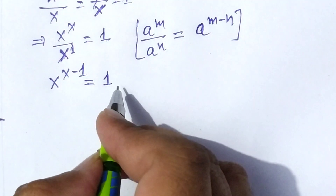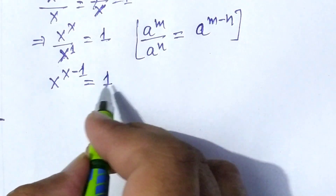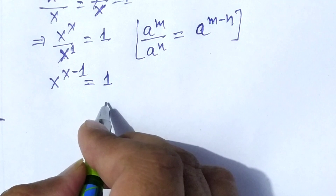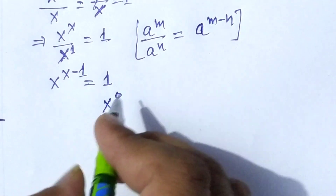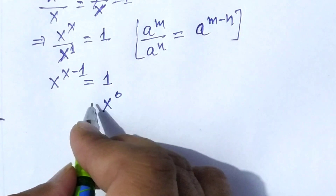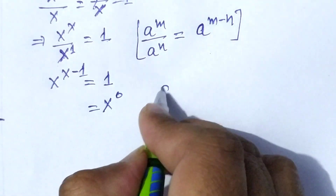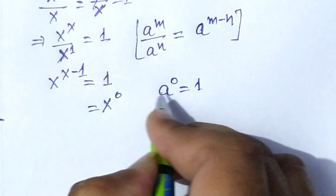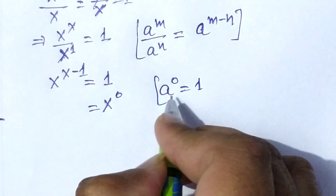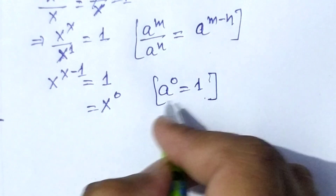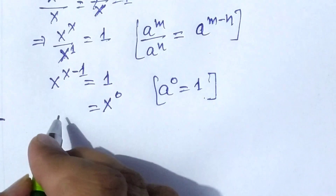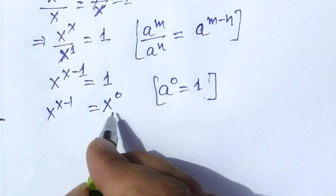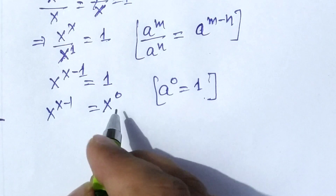Again, we know that 1 can be written as x to the power of 0, because a to the power of 0 is equal to 1, where a is any positive number. So x to the power of x minus 1 is equal to x to the power of 0.